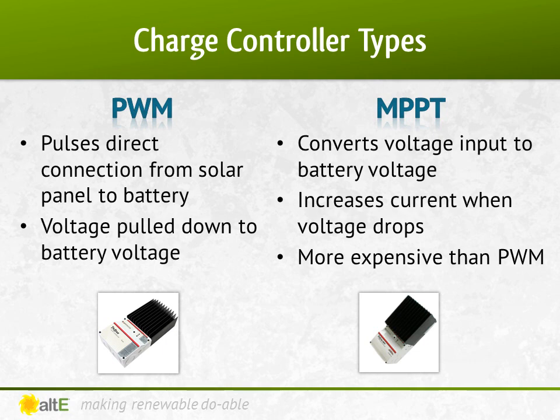MPPT charge controllers measure the VMP voltage of the panel and then down-convert the PV voltage to the battery voltage. Because power in equals power out, when the voltage is dropped to match the battery bank, the current is raised, so you are using more of the available power from the panel.